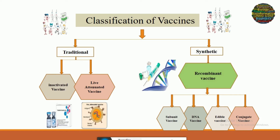These are further divided into subgroups. The traditional vaccines include the inactivated vaccines and the live attenuated vaccines. The inactivated vaccines use microorganisms that are killed and then used as a vaccine. In live attenuated vaccines, the microorganisms are weakened — their pathogenicity is removed so they cannot cause disease — and then these microorganisms are used as a vaccine. We also have synthetic vaccines that include recombinant vaccines, which are further divided into four groups: subunit vaccine, DNA vaccine, edible vaccine, and conjugate vaccine.